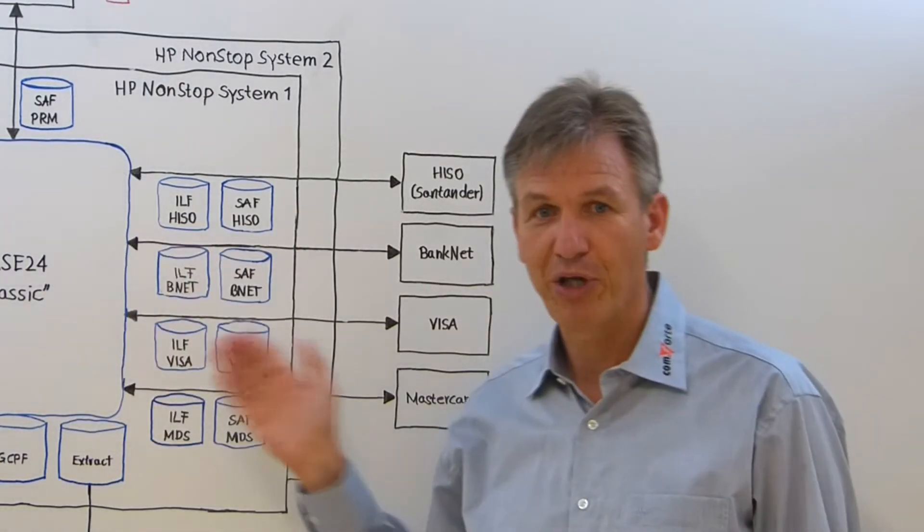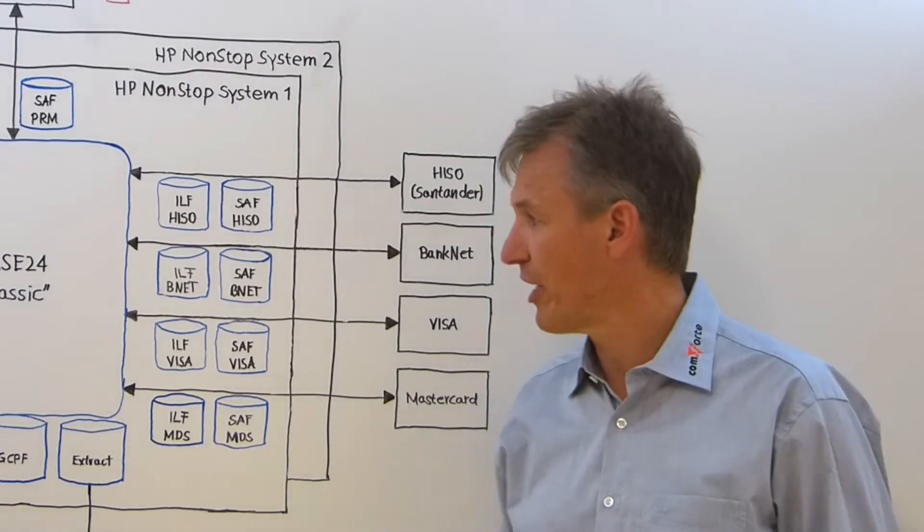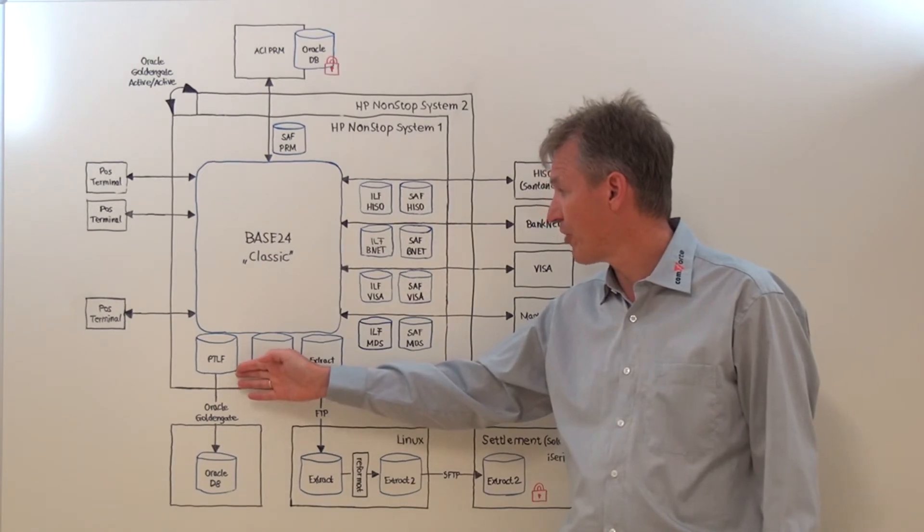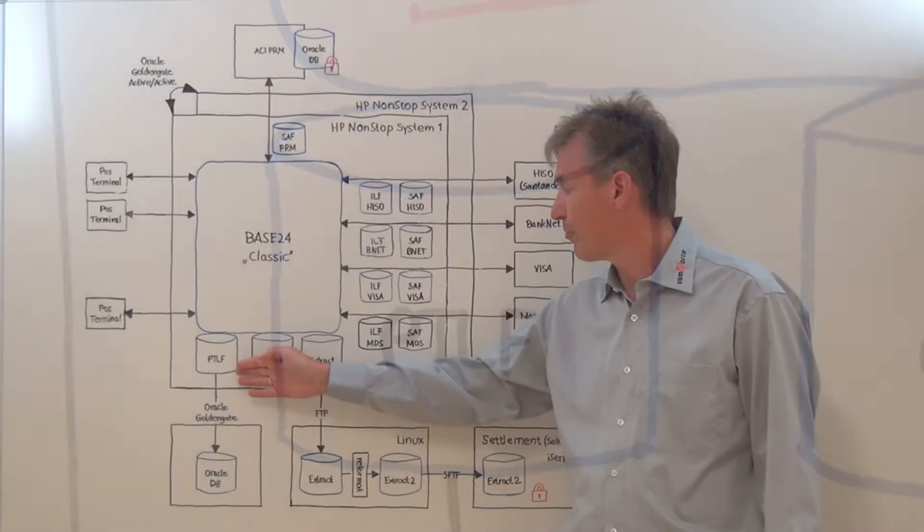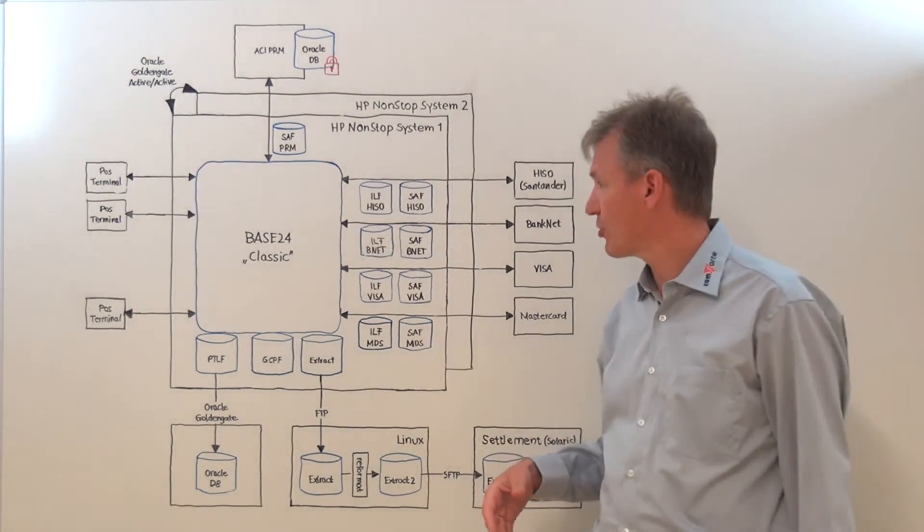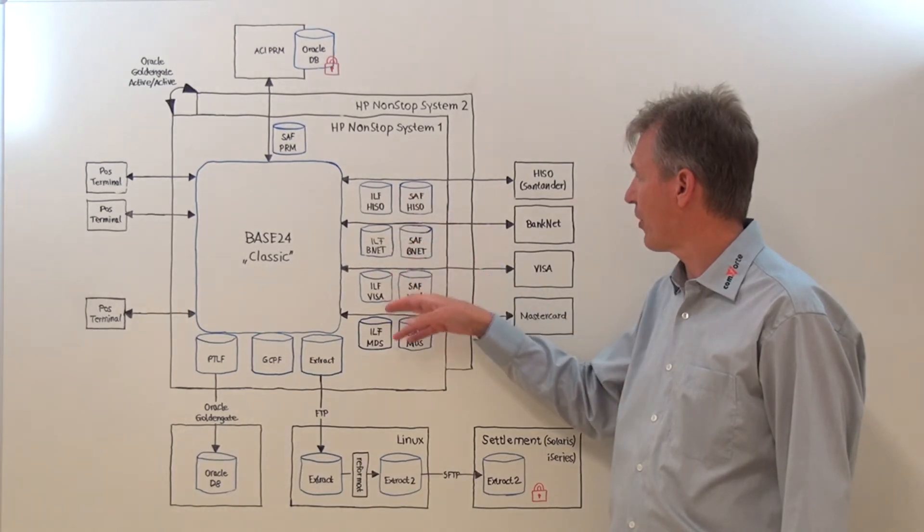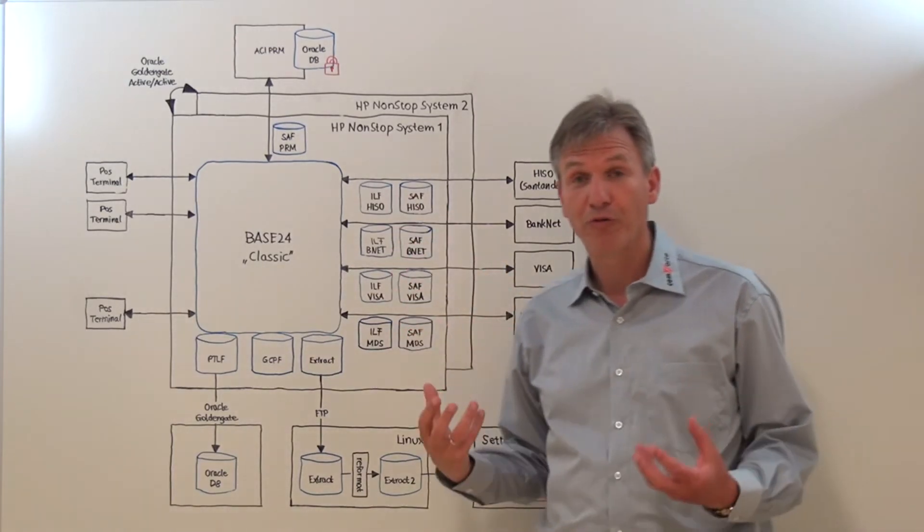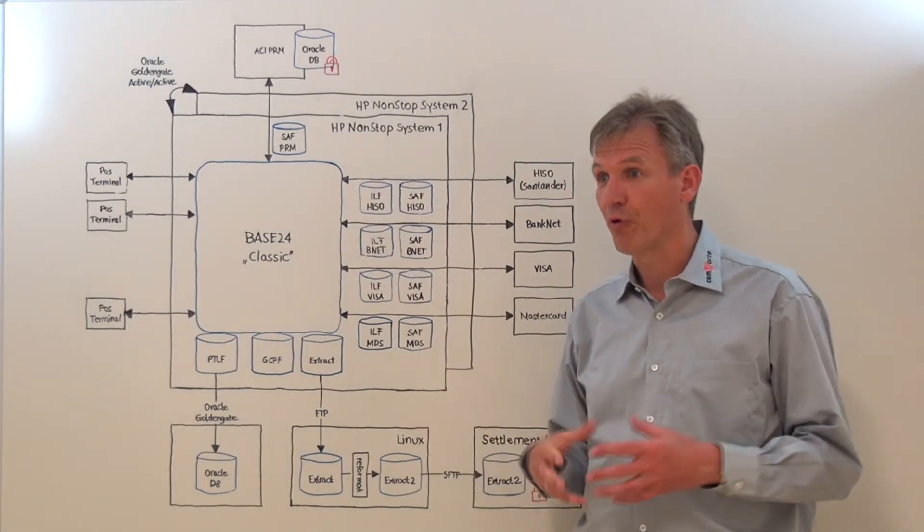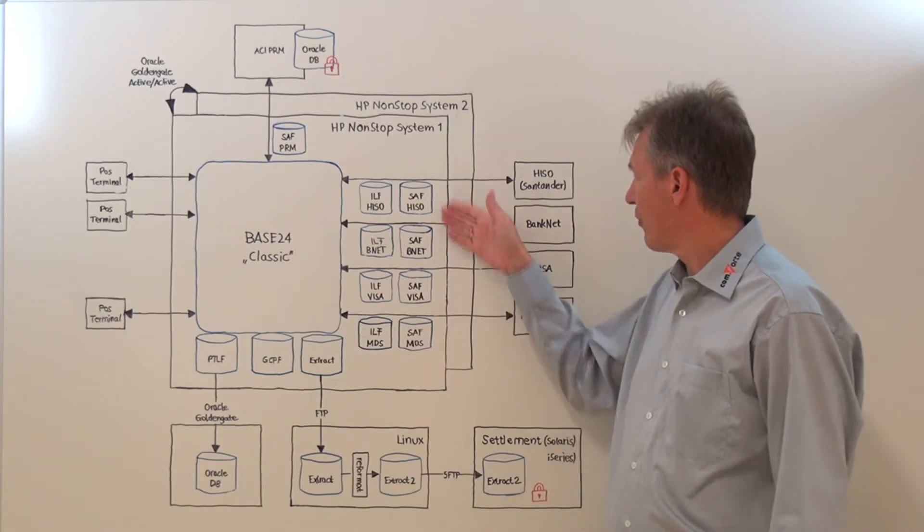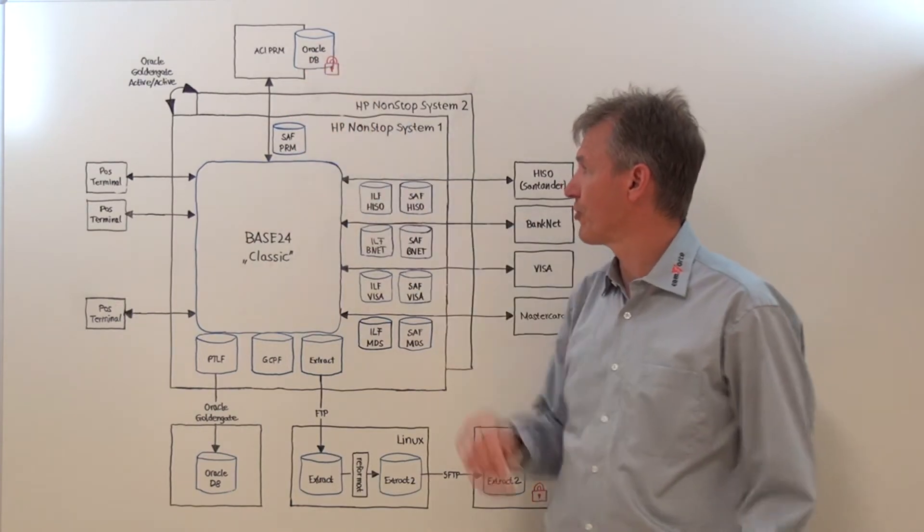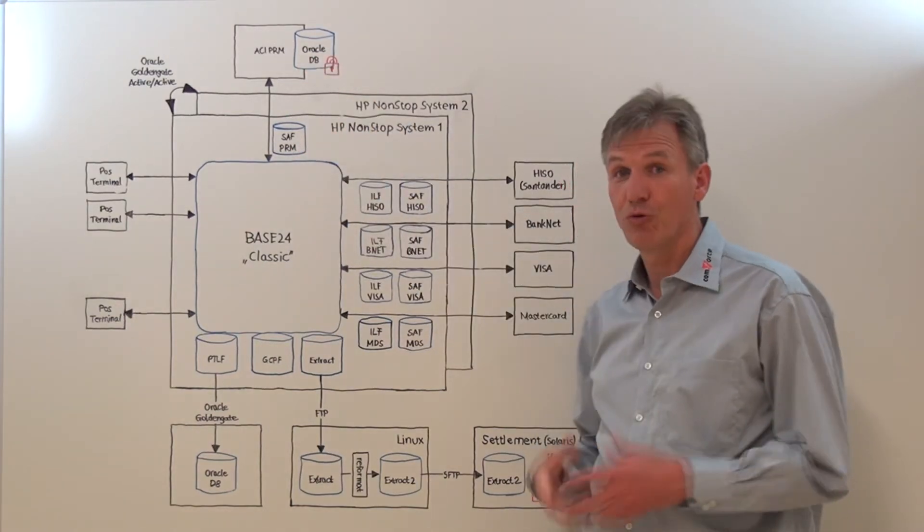On the way through, of course, BASE24 stores transaction data in various files like the major transaction log files, the POS transaction log files depicted here. Then we have log files for each of the interchange interfaces like the IMF files here, or we have store and forward files that come into play if an interface is down or for reversals for the various interfaces. We have a store and forward file here to a fraud detection system that is connected to the non-stop servers.